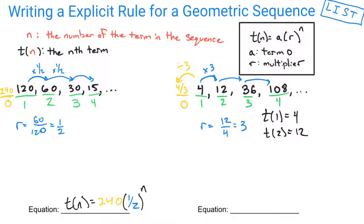You could write it as a decimal, of course, but I prefer fractions instead. So t of n is equal to that 4 thirds multiplied by your multiplier to the nth power, and that multiplier is 3.